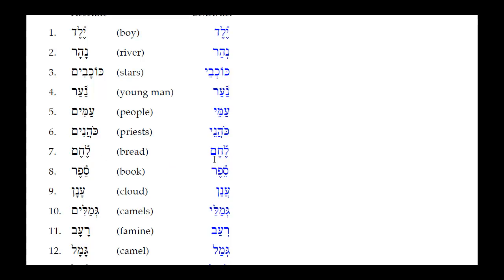Number seven: Sefer — another segolate noun, the absolute is also the construct. Number eight: Anan — for cloud. Two things happen: the Kamets under the Nun reduces to a Patak (closed unaccented syllable), and because the Alef is a guttural, the Kamets there reduces to a compound Sheva — a Hatef Patak — rather than a simple Sheva. Result: Anan.